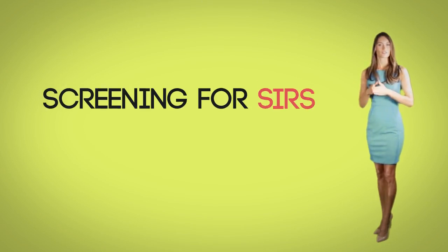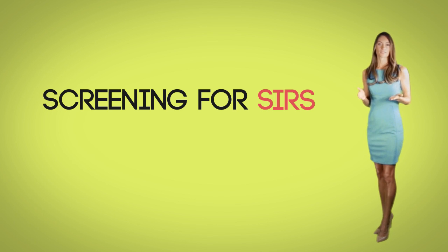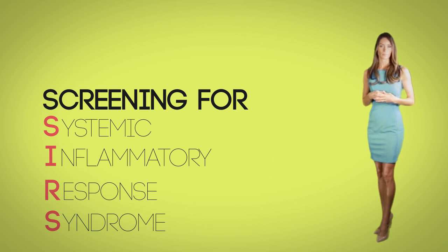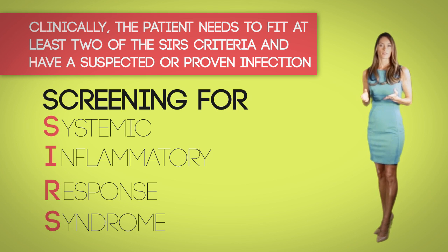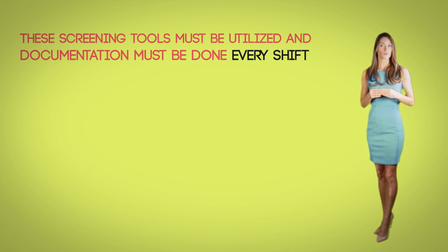Recognizing the early signs by screening for SIRS — Systemic Inflammatory Response Syndrome. Clinically, the patient needs to fit at least two of the SIRS criteria and have a suspected or proven infection. Most hospitals are instituting tools to help screen for sepsis, and these screening tools must be utilized with documentation completed every shift. At my hospital we have a two-tier system. As we go over these tiers, keep in mind to always look at the patient's trends — what we're really looking for is changes within the last 48 hours, acute onset. Whenever you see an abnormal laboratory result, look to see if the patient has been that way for a week or two weeks, or if it happened within the last 48 hours and has been steadily decreasing or rising.